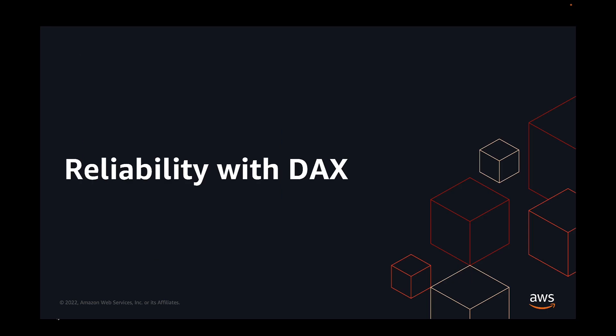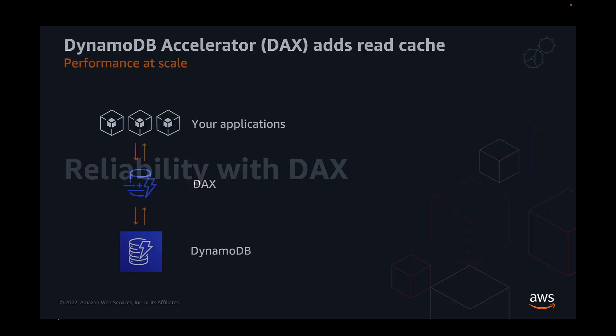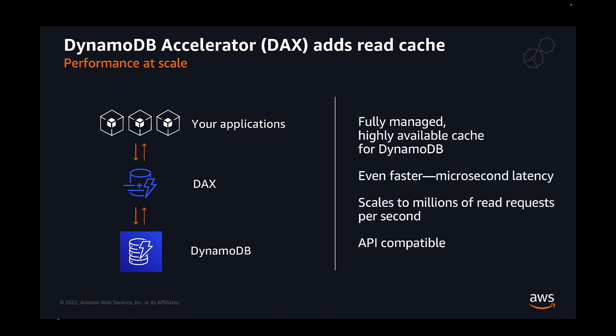Let's take a look at reliability with DynamoDB Accelerator. For even more performance, Amazon DynamoDB Accelerator, or DAX, is a fully managed, highly available, in-memory cache for DynamoDB that delivers up to 10 times performance improvement — from milliseconds to microseconds — even at millions of requests per second. DAX does all the heavy lifting required to add in-memory acceleration to your DynamoDB tables without requiring developers to manage cache invalidation, data population or cluster management, so you can focus on building great applications without worrying about performance at scale.